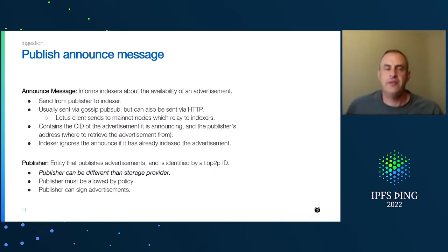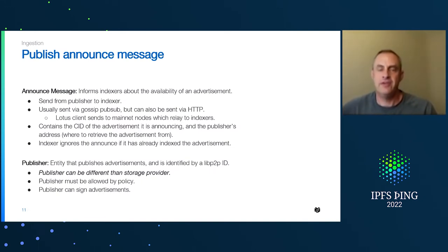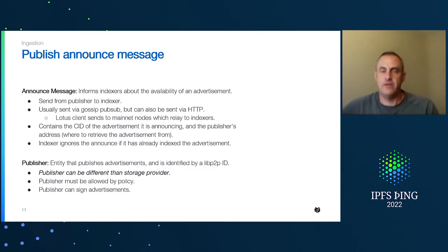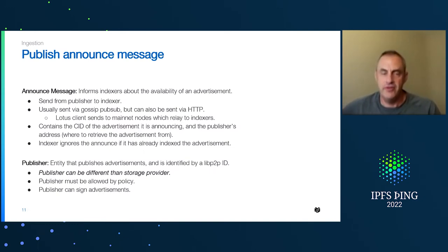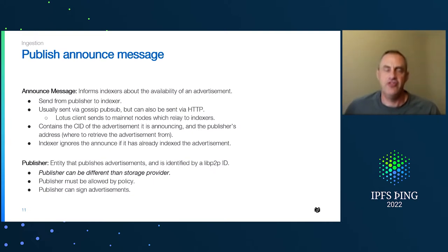The first part is the publish. The announce message is what gets broadcast out from the publisher to the indexer, usually sent over gossip pub sub, but we can also send it via HTTP. This is already built into Lotus clients, and it will be able to send this over gossip pub sub to the mainnet nodes, which then relay that publication to the indexers.